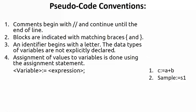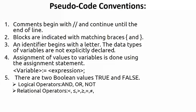Boolean values are TRUE or FALSE, written in uppercase. Logical operators AND, OR, NOT can be used wherever needed. Relational operators include less than, less than or equal to, greater than, greater than or equal to, and not equal to. Unlike C, you can write 'less than or equal to' directly using that notation since you are writing an algorithm.